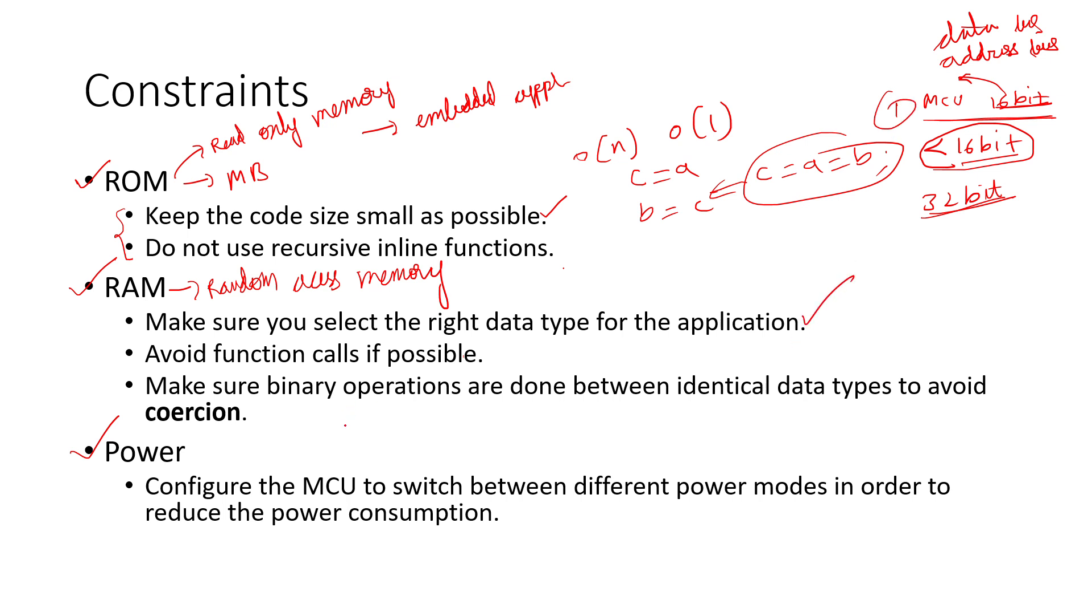Second, avoid function calls if possible. Write functions only if using the same implementation multiple times. The third major thing: make sure binary operations are done between identical data types to avoid coercion.